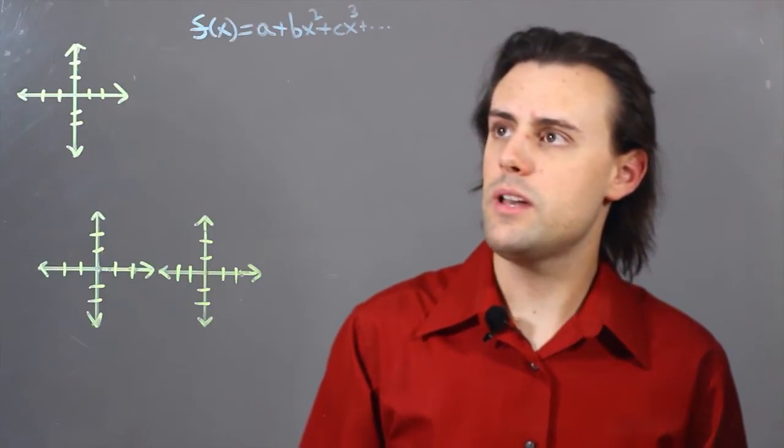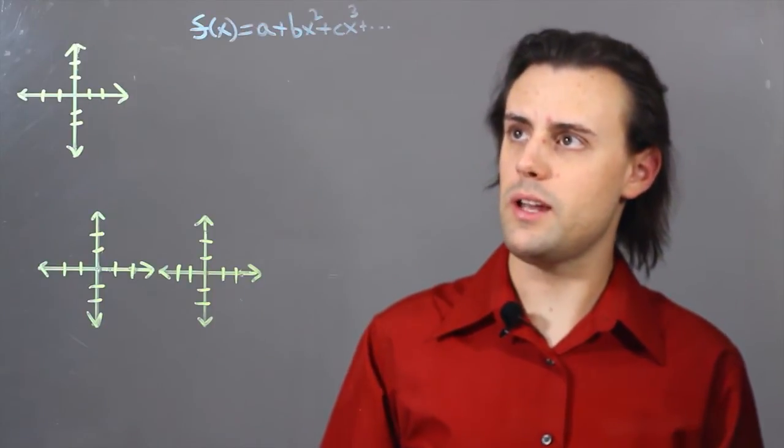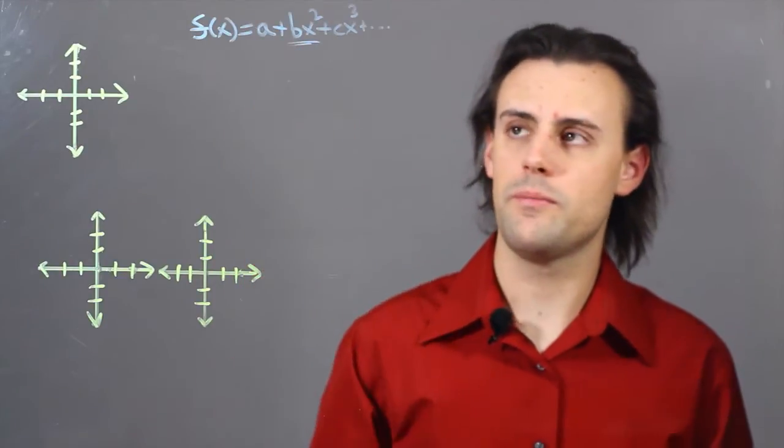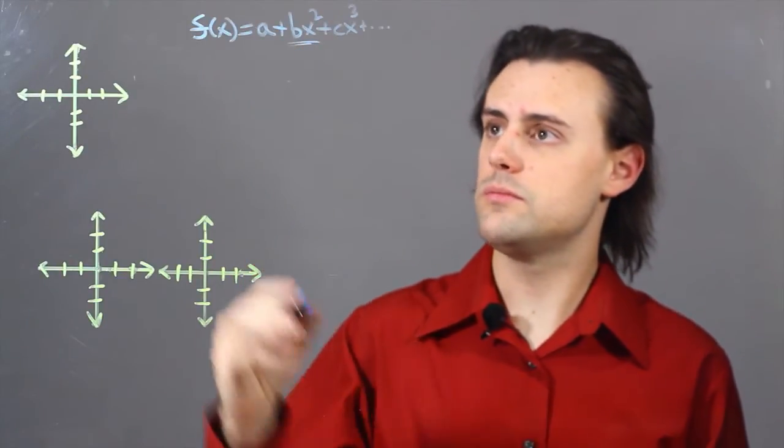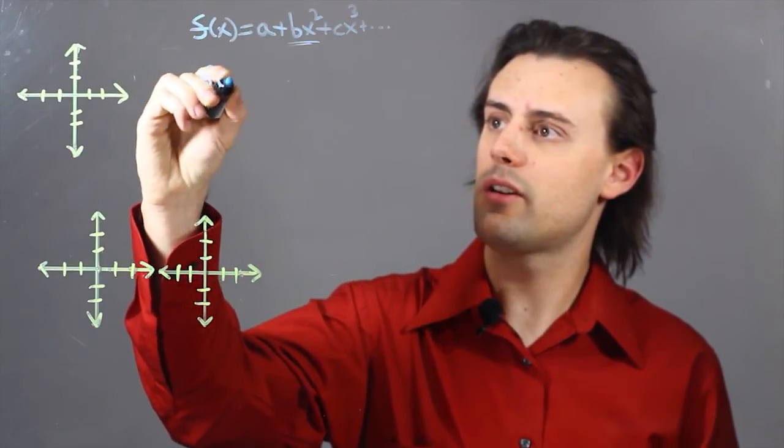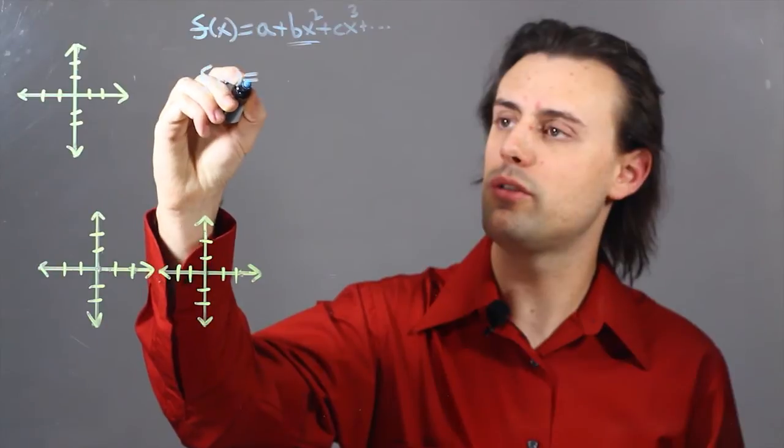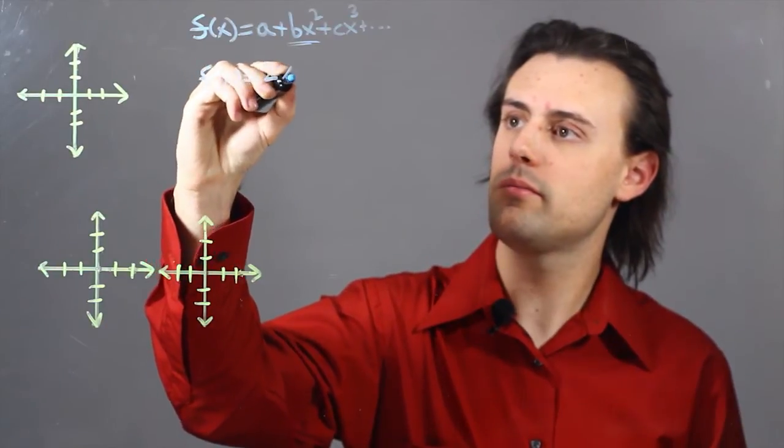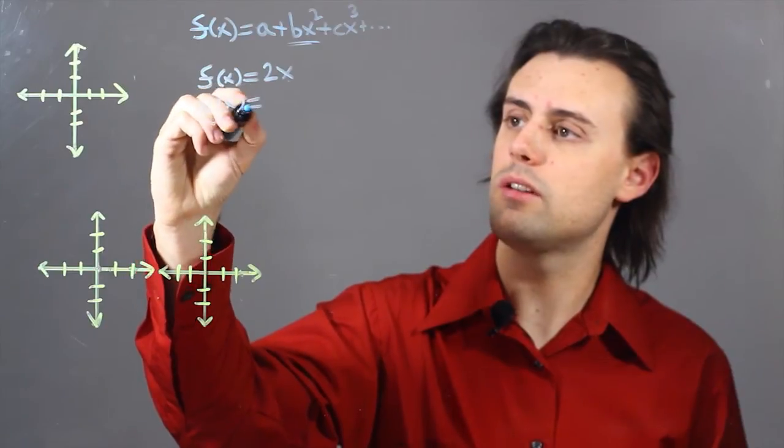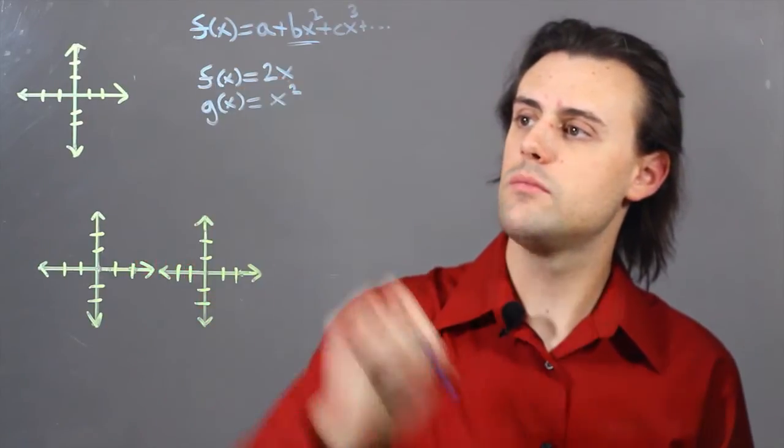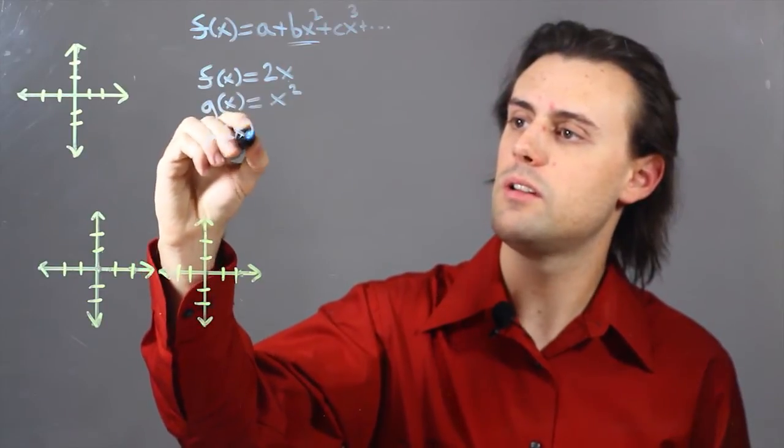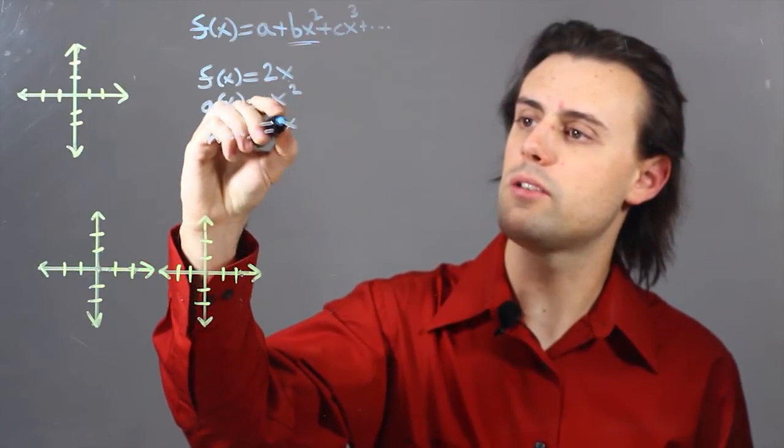And if we want to examine a monomial we would have to just look at one of these terms. So a monomial, I can come up with three different examples. Let's consider f of x is equal to 2x and another monomial g of x is equal to x squared and finally a third monomial h of x is equal to x cubed.